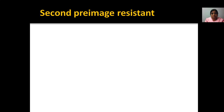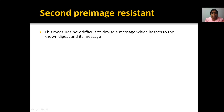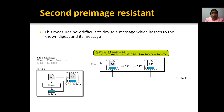Second pre-image resistance is also called weak collision resistance, where even if messages are the same, the hash codes may not be the same. It measures how difficult it is to devise a message which hashes to a known digest. Here we take a message, apply the hash function, get a hash code, and also provide the hash code along with the message. We check whether both hash codes are the same — if they are the same, the person is authenticated; otherwise, authentication fails.